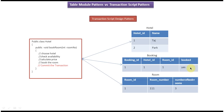As per the Transaction Script design pattern, we define only one class. That class has one method: the 'bookRoom' method. You just pass the room number and this method takes care of booking the hotel room. This single method communicates to all three tables and is responsible for booking the room number.